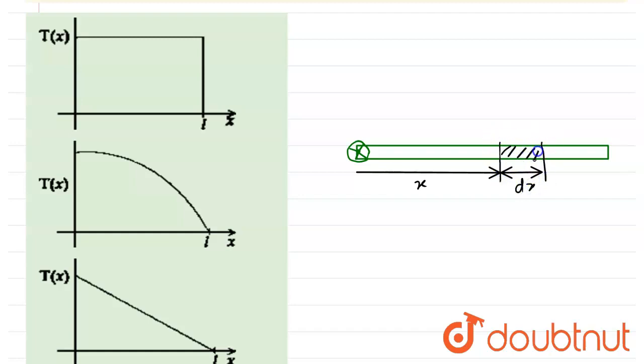I will draw the FBD for this element dx. Let's suppose at distance x the tension is T, and at this cross section the tension is T+dT. We don't know whether the tension will decrease or increase. If x increases from x to x+dx, then T increases from T to T+dT. So at distance x the tension is T, and at x+dx the tension is T+dT.